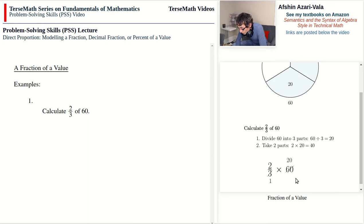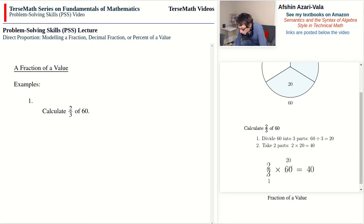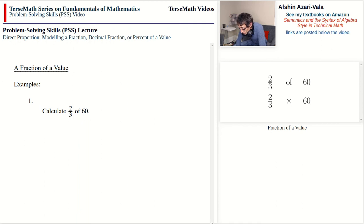So multiplication of two-thirds by 60 carries out the same two steps as finding two-thirds of 60: divide 60 into 3 parts (the reduction), and then take two parts (2 times 20). The solution to calculate two-thirds of 60 is two-thirds times 60, which gives us 40.